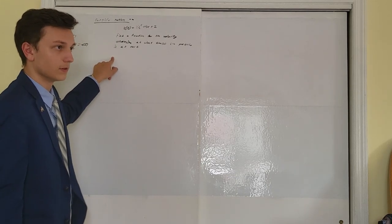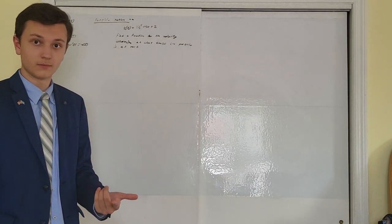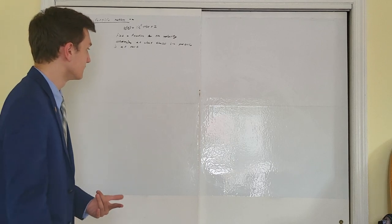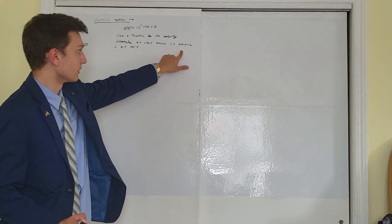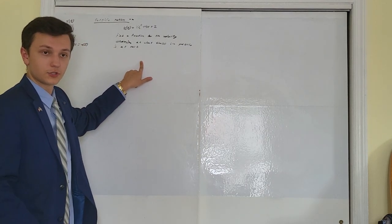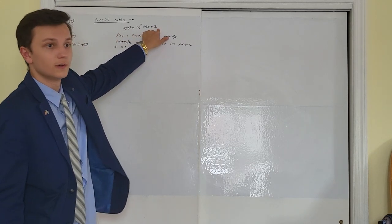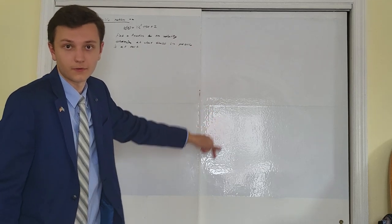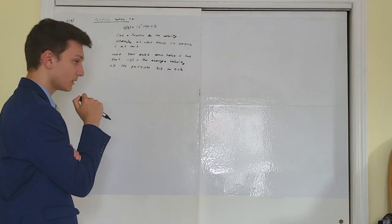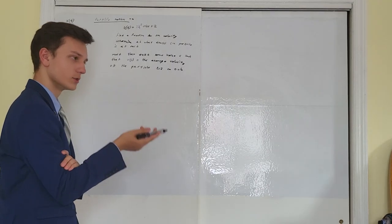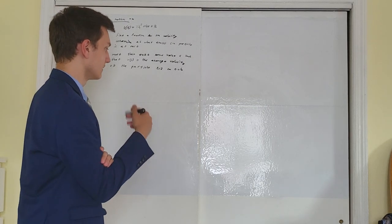This is often coupled with a second question: at what position is the particle at rest? You solve for t first, and now that you know the times when the particle is at rest, you plug the time into the position function, and that gives you the position of the particle when it is at rest. They often ask something about average rate of change, but usually do that with the second derivative just to trip you up.